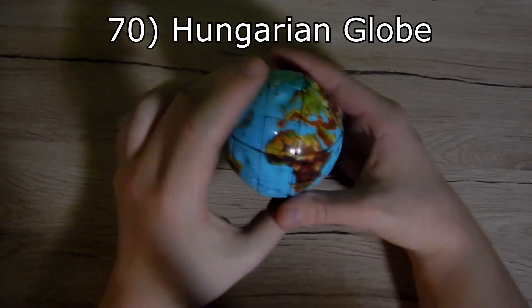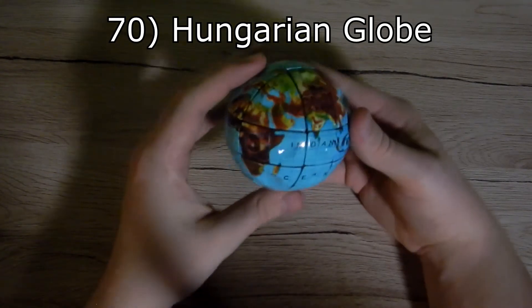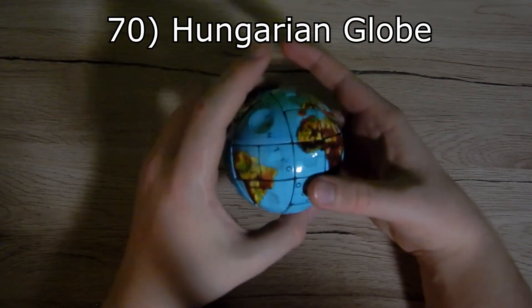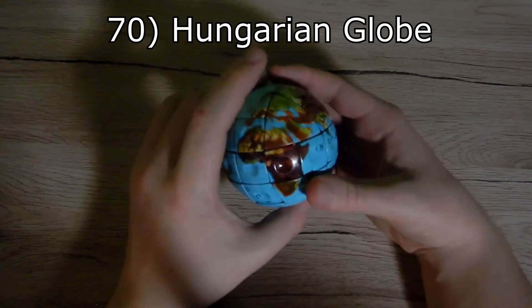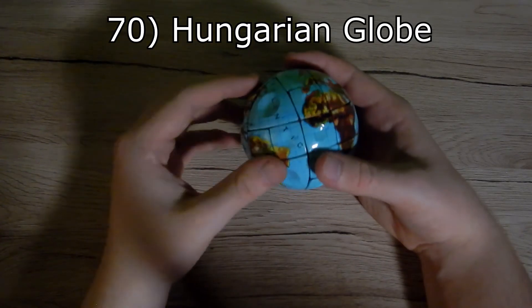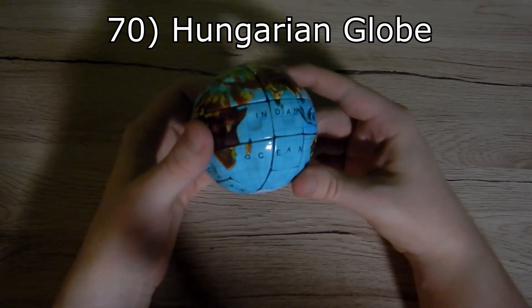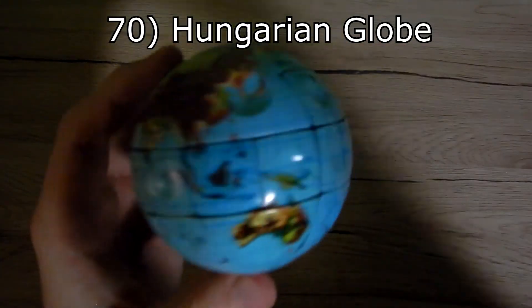The last cube I have is a Hungarian globe. You could see that in my video, the unboxing. It is quite easy puzzle for some cases, but it looks so cool and I love it so much.